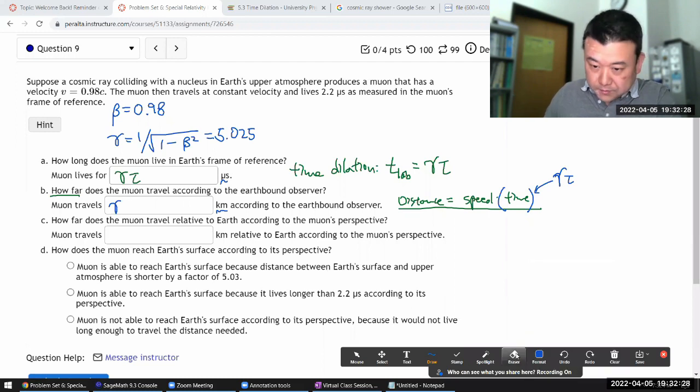so it's moving at speed beta c times the duration of time, which is gamma tau. Plug in the numbers, that's the answer.